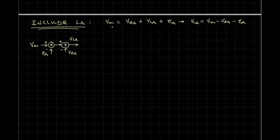Sorry, let me rewrite that. We know that V-L-A of T is equal to L-A times D-I-L-A D-T, which is D-I-A D-T. All right, we can also write that I-A is equal to one over L-A, the integral of V-L-A.